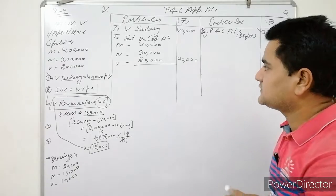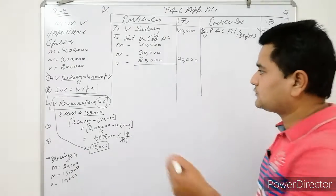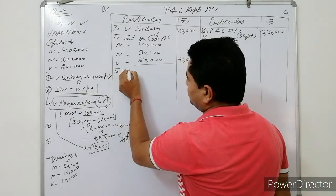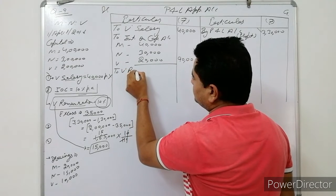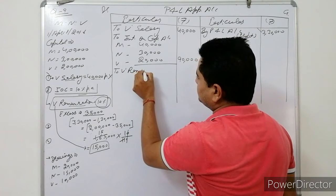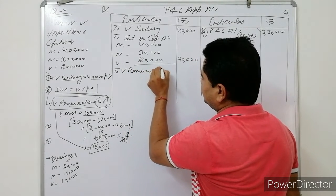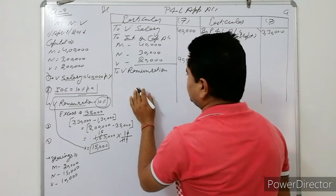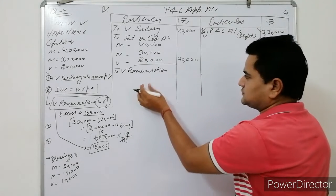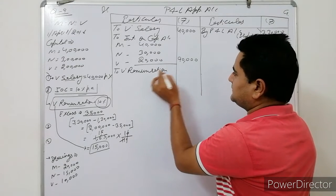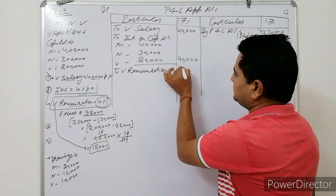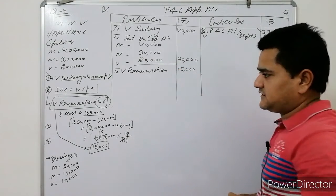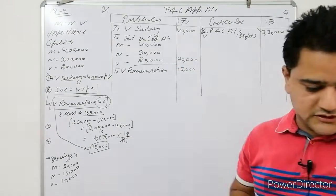Remuneration (पारिश्रमिक) is equivalent to salary. So write 'To Weibo — Remuneration' on the debit side: Rs.15,000. That covers the second point. Now let's discuss the third and fourth points.